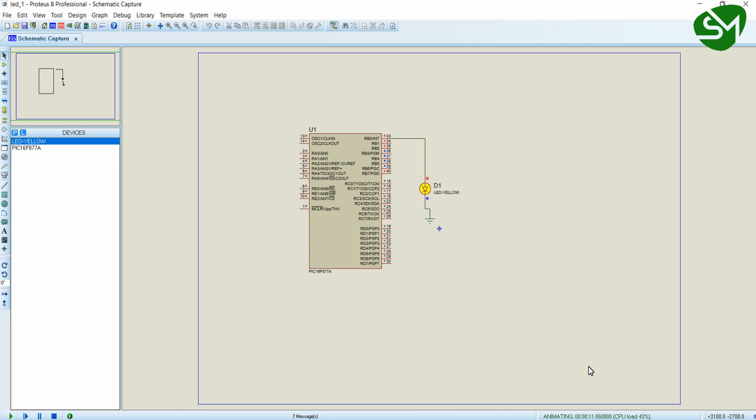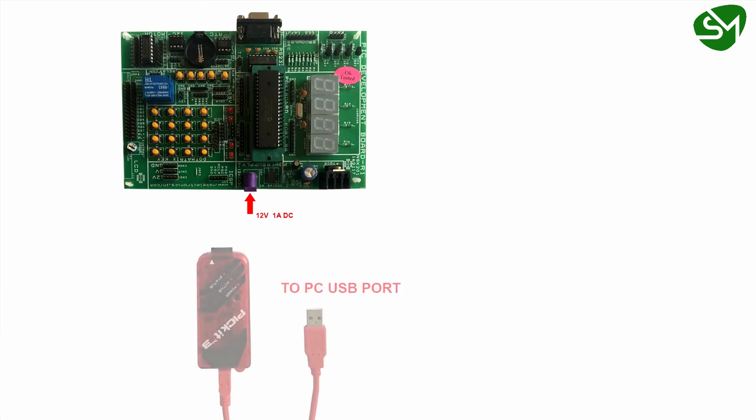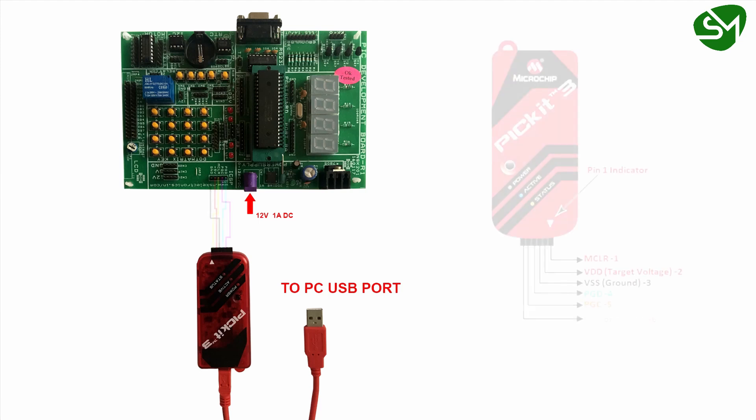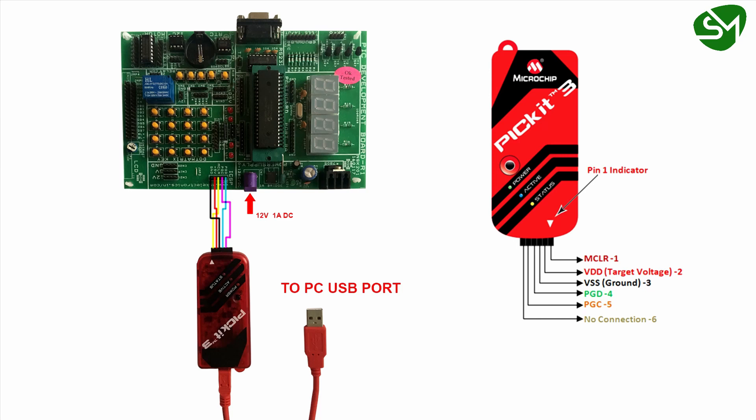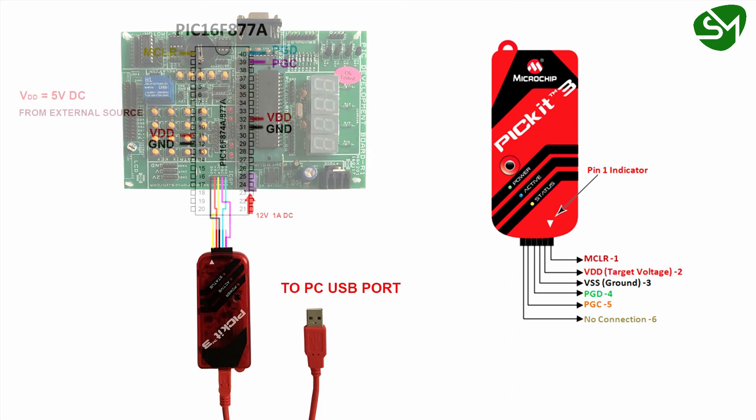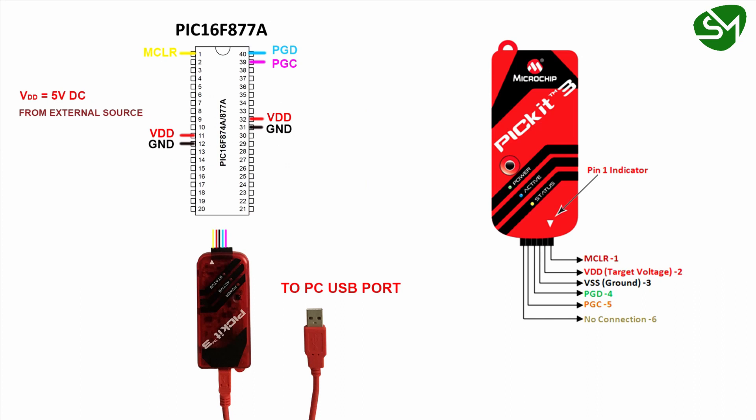This is an accurate delay, so you can use it for other applications as well. For uploading the program to the microcontroller, first power the development board using an external 12V 1A adapter through the provided socket. Then connect the PICKit3 to your PC USB port using a mini USB cable. The terminals of PICKit3 are then connected to the microcontroller as per the circuit diagram. If your board doesn't show pin nodes or you don't have a development board, you can connect the PICKit3 terminals directly or build the circuit on a breadboard.